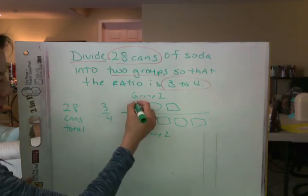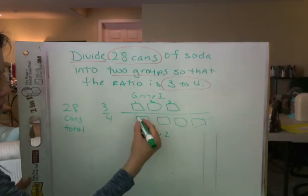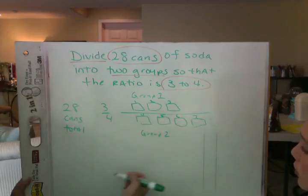Count all the boxes. Okay, so we have 1, 2, 3, 4, 5, 6, 7. How many boxes do we have? You have 7. 7 boxes, good.